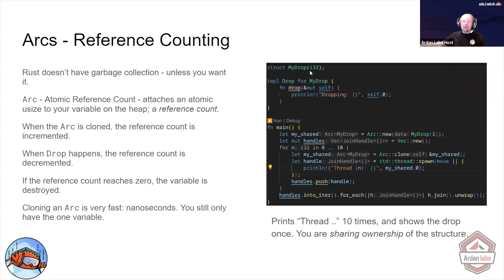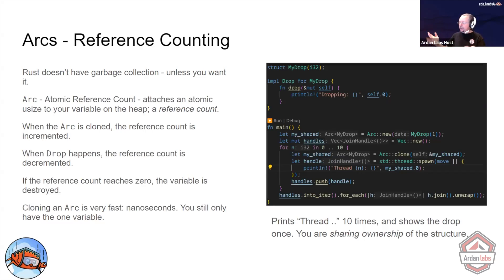We've got MyDrop again, which will indicate when something drops. To create an ARC, use ARC::new and put an instance of your droppable type in there. It can be almost anything you want. In this case, I just added the drop to illustrate what's going on.